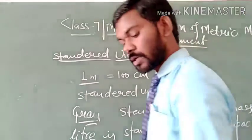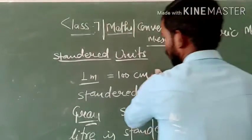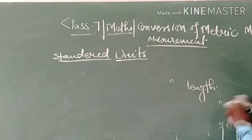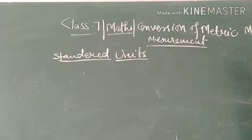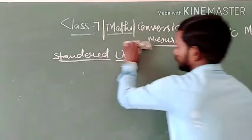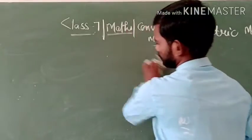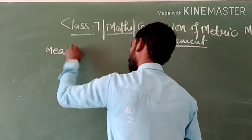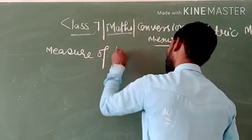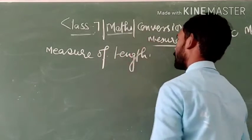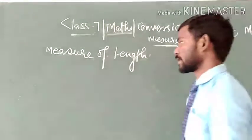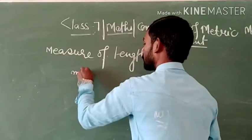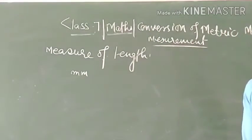Now we shall discuss some fundamental conversions of units, which will be used in our further study in this chapter. So listen carefully. Our first topic will be the measure of length. In measure of length, our smallest unit will be millimetre.